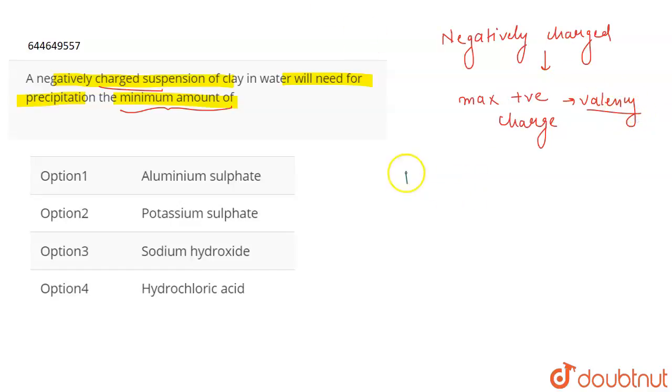Now if we talk about the Hardy-Schulze rule - according to the Hardy-Schulze rule, more is the valency of the cation. We will be looking for the charge on the cation because we have a negatively charged sol.